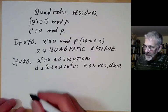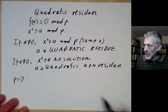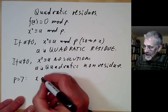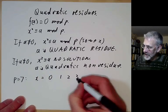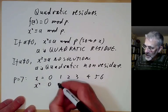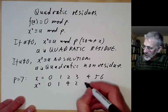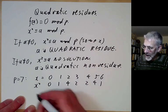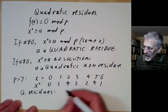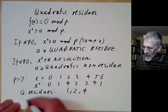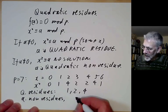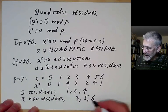For example, let's take p = 7. What are the residues and what are the non-residues? Let's look at x: x can be 0, 1, 2, 3, 4, 5, or 6. The squares are 0, 1, 4, 2, 2, 4, 1. So the quadratic residues are 1, 2, and 4, and the quadratic non-residues are 3, 5, and 6.